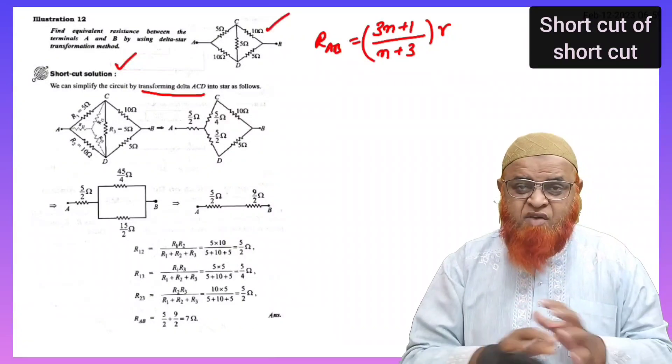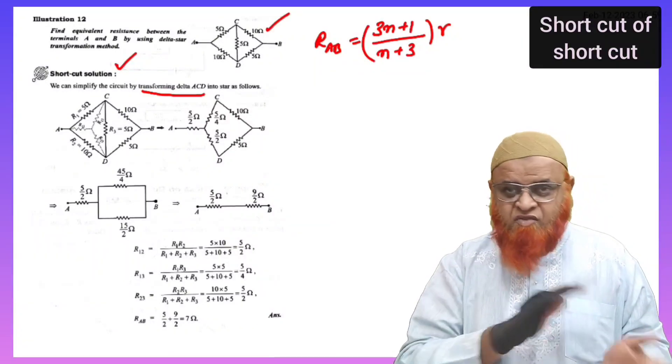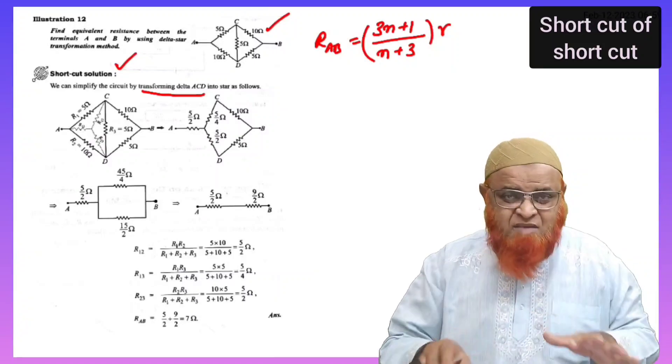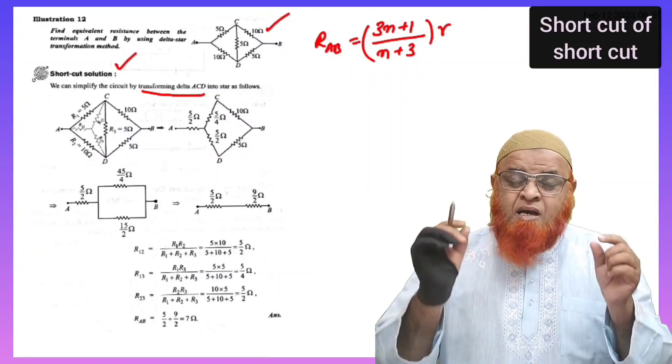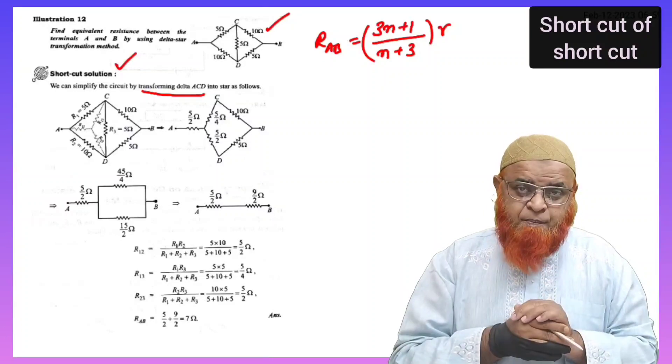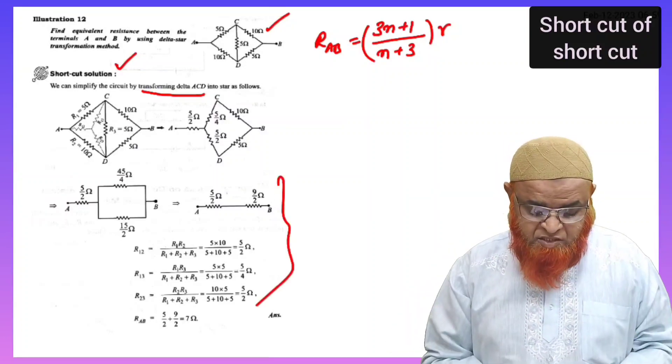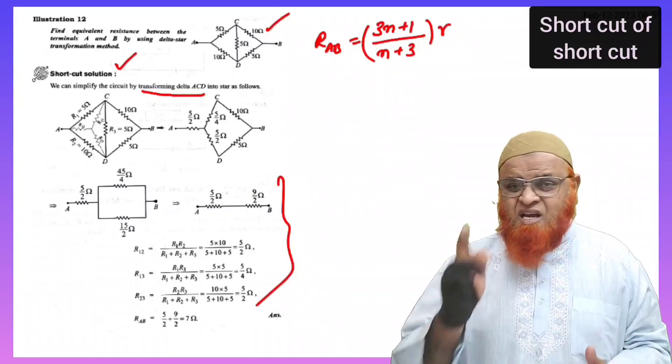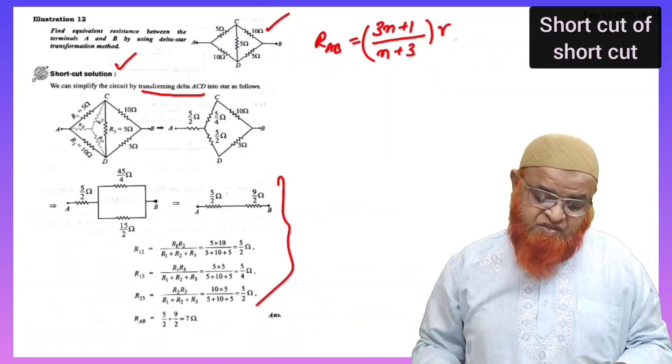If this type of uneven Wheatstone bridges were 5, 10, 10, 5 which is unsymmetric, we cannot apply the balanced Wheatstone bridge condition. For that, he has solved a lengthy method, delta star transformation. It takes rarely 1 or 2 minutes. Definitely, it will be wasted.